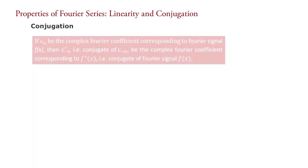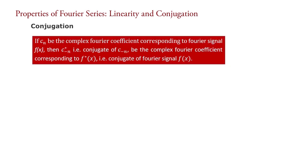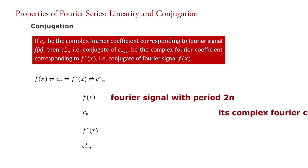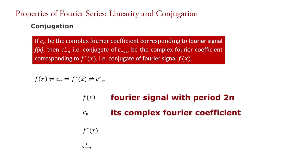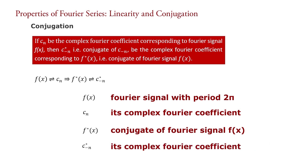Second: conjugation. The conjugation property is defined as follows. If cn is the complex Fourier coefficient corresponding to Fourier signal f(x), then c minus n star — that is the conjugate of c minus n — is the complex Fourier coefficient corresponding to f(x) star, the conjugate of Fourier signal f(x). We can write it as: f(x) corresponds to cn gives f(x) star corresponds to c minus n star. Here f(x) is a Fourier signal with period 2 pi, cn its complex Fourier coefficients, f(x) star is the conjugate of f(x), and c minus n star is its complex Fourier coefficient.